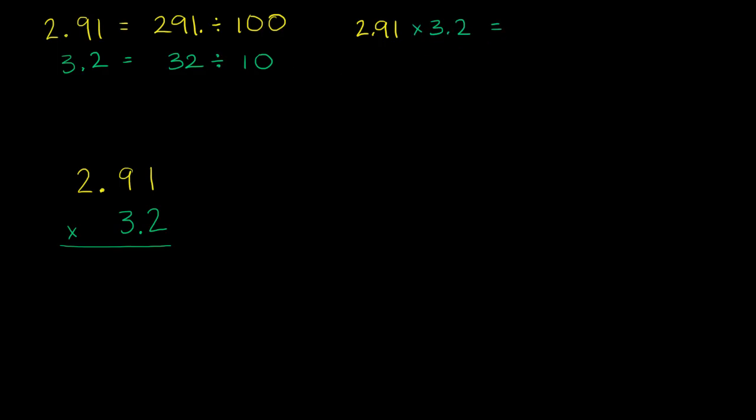As being the same thing as, instead of 2.91, I can write 291 divided by 100, and then times, instead of writing 3.2, I could write 32 divided by 10. And this can be rewritten as 291 times 32 divided by 100 divided by 10.